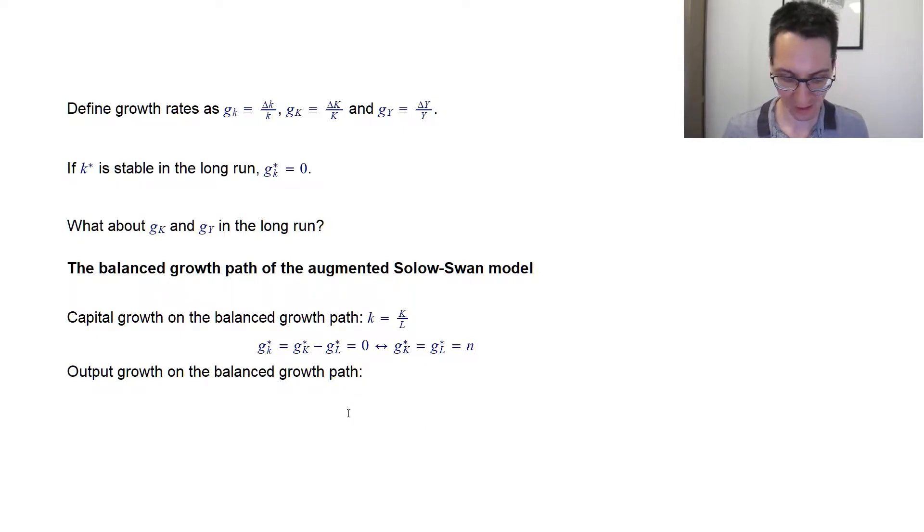So since output per worker is equal to f of capital per worker, and since g of capital per worker in the long run equals zero, then what does that mean for the long run growth rate of little y? Well, yes, if capital per worker doesn't change, and y is a direct function of capital per worker, then in the long run, output per worker does not change either. So g of small y star equals zero. The growth rate of capital per worker is at steady state, and the growth rate of output per worker is at steady state.